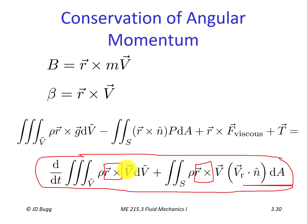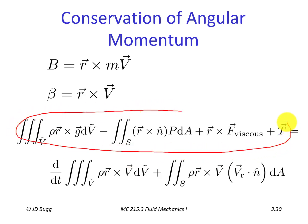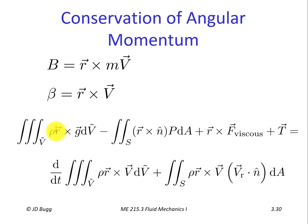The left-hand side of the equation represents all of the moments or torques applied to our control volume that result in the change in angular momentum shown on the right-hand side. The four terms on the left-hand side of the angular momentum equation are identical to those of the linear momentum equation, except that each term has an r cross in it.